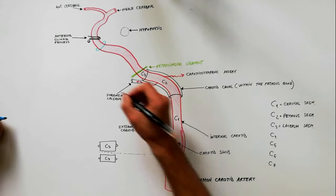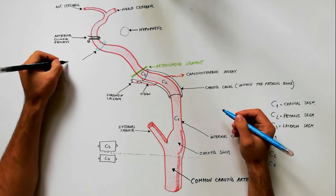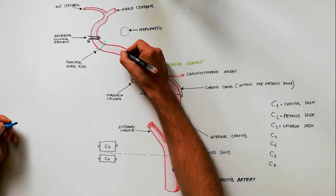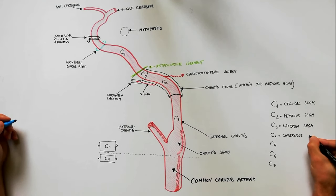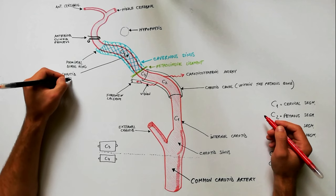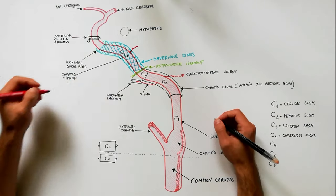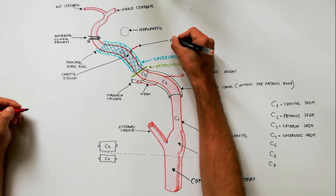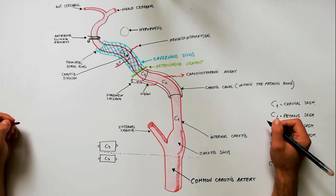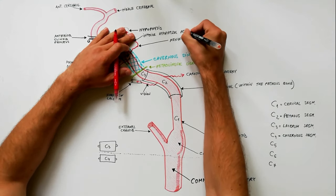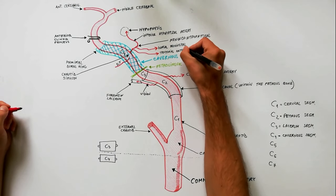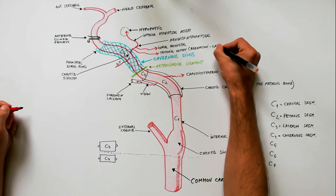The C4 segment, or the cavernous segment of the internal carotid artery, begins at the petrolingual ligament and extends to the proximal dural ring. As its name implies, the cavernous segment is surrounded by the cavernous sinus, and the curve in this segment is called the carotid siphon. The branches of the cavernous segment are the meningohypophysial artery and the inferolateral trunk. The meningohypophysial artery gives off the inferior hypophysial artery, the dorsal meningeal artery, and the tentorial artery, also called the Bernasconi-Cassinari artery or the Italian artery.